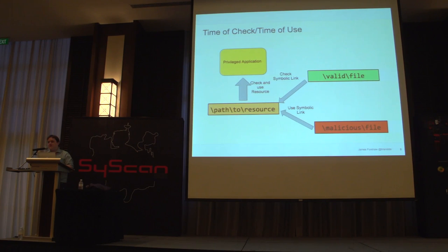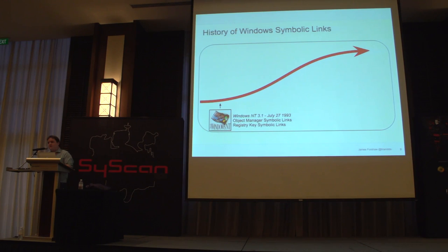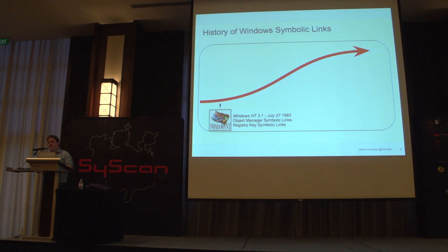We'll see examples of Windows vulnerabilities which meet all these bars as we go along. Windows is something you wouldn't necessarily associate with symbolic link functionality because, for the most part, it's actually relatively undocumented. You'll find little bits in MSDN if you really look hard. But it's been around since Windows NT came out — Windows NT 3.1, released in 1993. It actually came with two types of symbolic links: object manager symbolic links and registry key symbolic links.